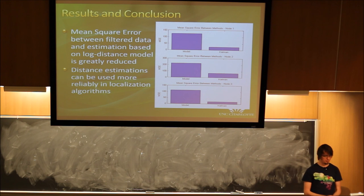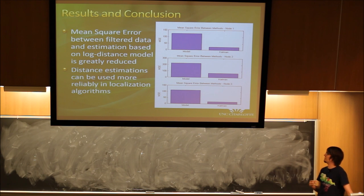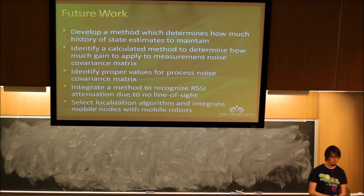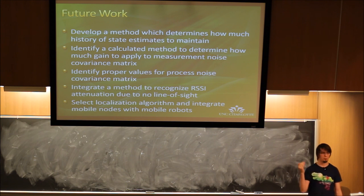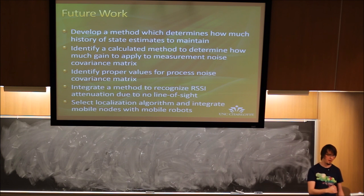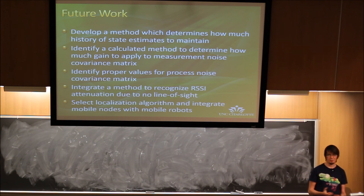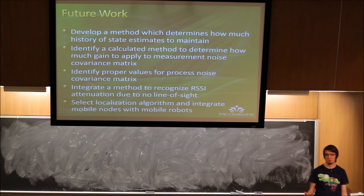The results show the mean squared error for each node's distance estimation — using the model alone versus with the Kalman filter — and the Kalman filter reduces the error fairly significantly. For future work, some things that need to be refined include how much history to save for each node, since how quickly the mobile robot moves through the environment will determine how much history is needed to reliably detect multipath fading versus actual acceleration. We also need to identify how much gain to apply to the artificially boosted noise — it may not even be necessary if you're keeping the proper amount of history for the robot's speed.